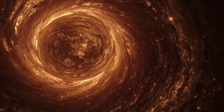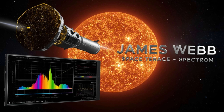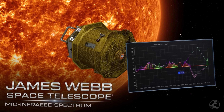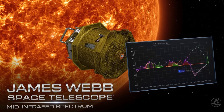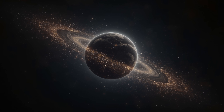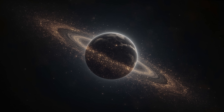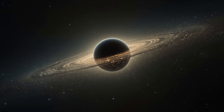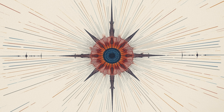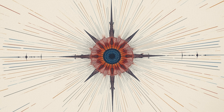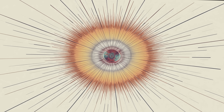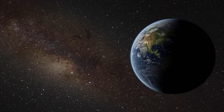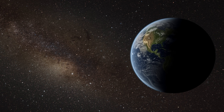JWST's thermal verdict: if sunlight misled us, JWST's heat reading had to speak clearly. Its mid-infrared spectrum showed more energy at longer wavelengths than a small nucleus could comfortably produce at that distance. That tilt in the spectrum acts like a thermometer and a tape measure at once. It told observers the surface was cooler than a compact body would be, yet the total infrared glow was strong. Put together, that points to a larger radiating area. In plain terms, the heat said: bigger.